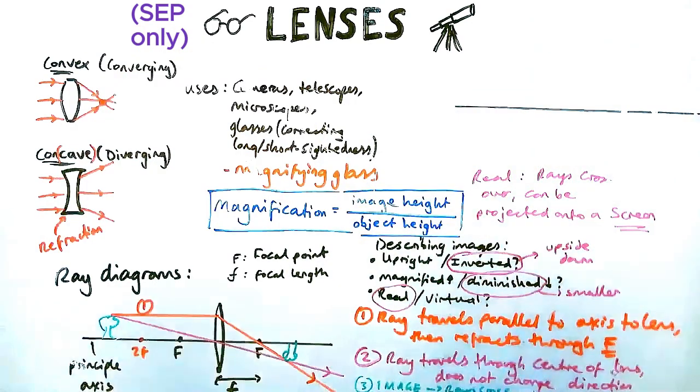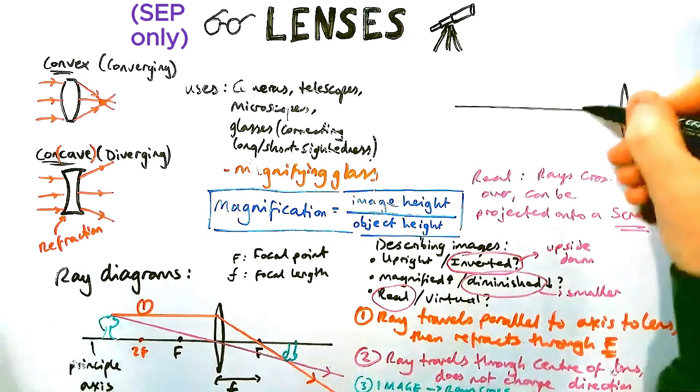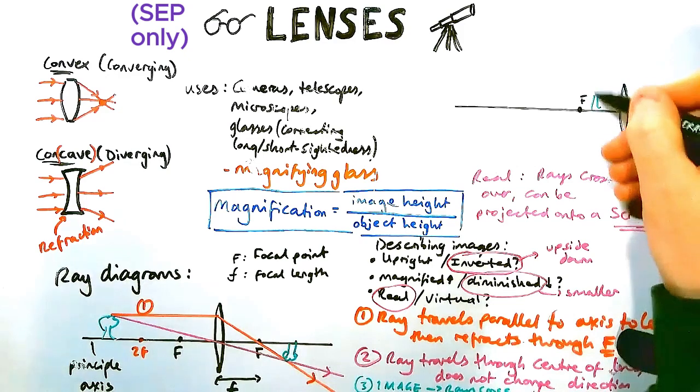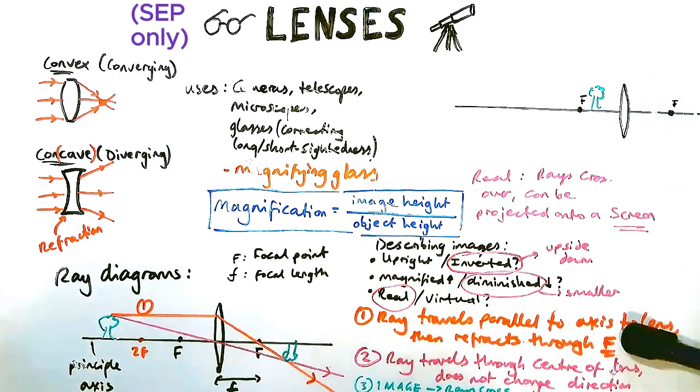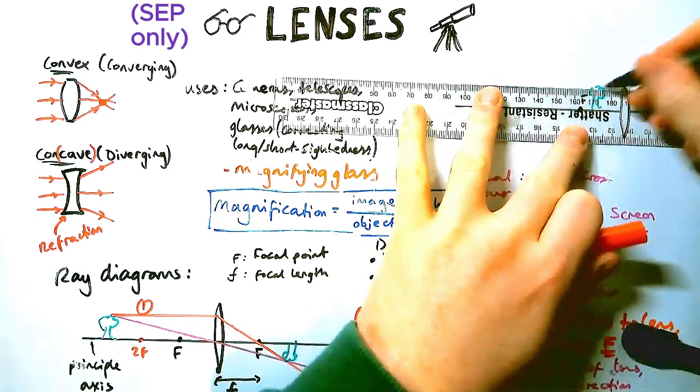So the second example with a convex lens, again, we're going to set up in a similar way, going to have our two focal points and our principal axis. But this time the object has moved. Instead of being quite far away, it's now quite close.